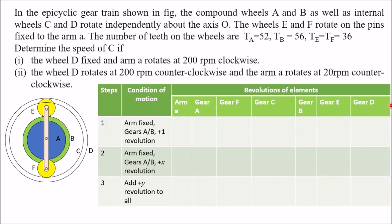We prepare a table. The first column is always arm A. Then gear A is next, followed by gear F since A meshes with F, then gear C since F meshes with C. Next comes gear B (same speed as A since compound), then gear E since B meshes with E, and finally gear D since E meshes with D.